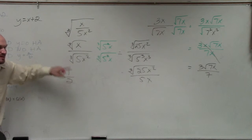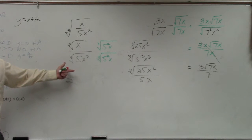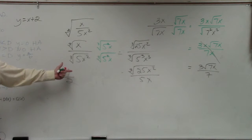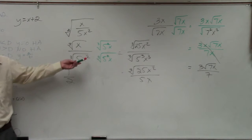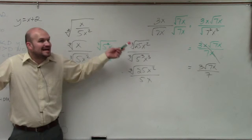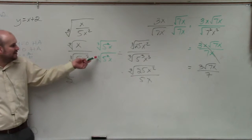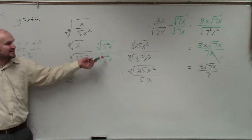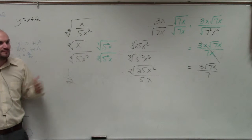As long as you multiply the top and the bottom by the same thing, it doesn't matter what you multiply by. Where did you get 5x squared? You multiply by 5 squared x, because what happens when you do that — you get 5 cubed and x cubed. Since I'm doing a cube root, that's what I need to take the cube root of. If you just did 5x squared, you would have had 25x to the fourth, which you can't take the even cube root of.